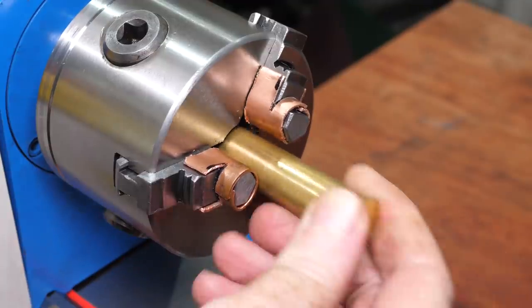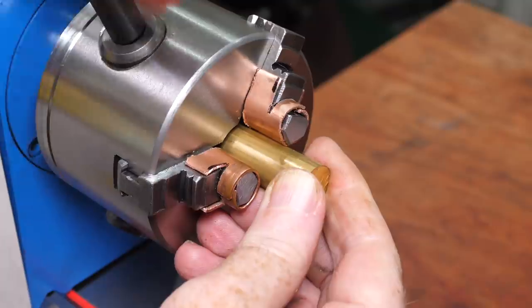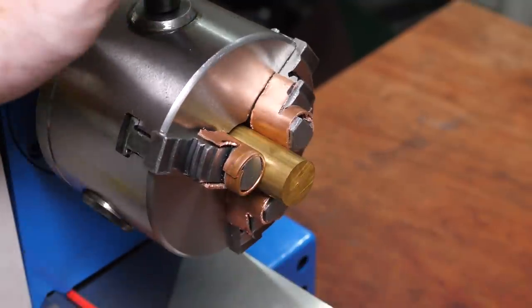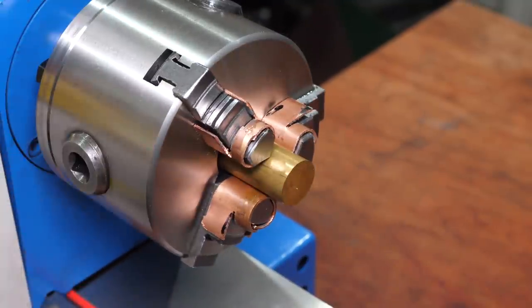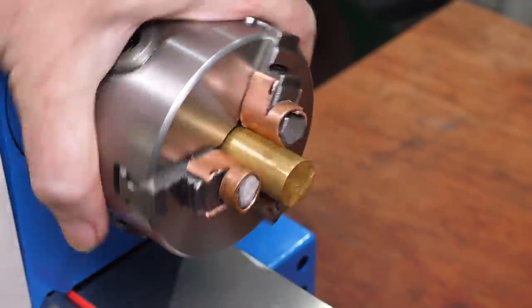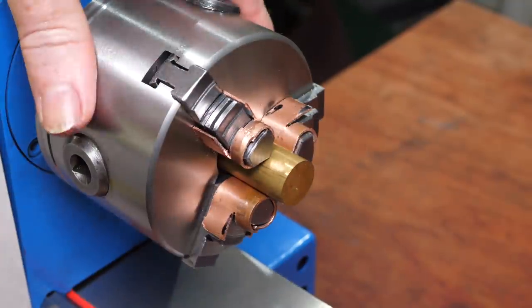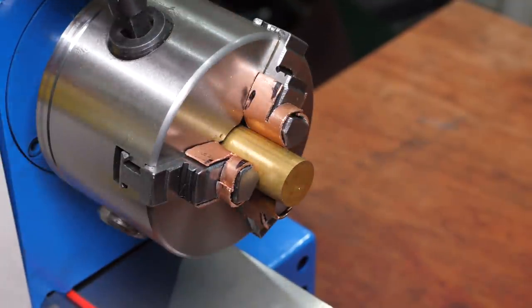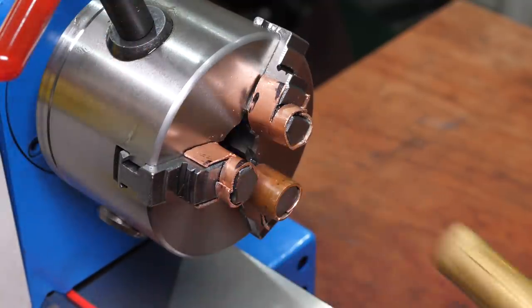I can now use the soft jaws to hold parts when I want to reduce the risk of jaws marking a part. Once I'm done with them, they're easy to remove, and keep to hand for another time.